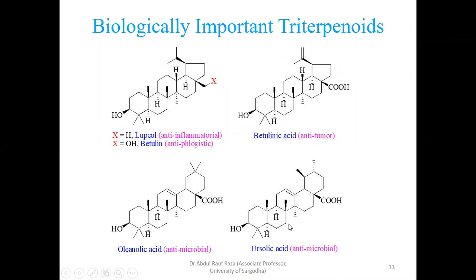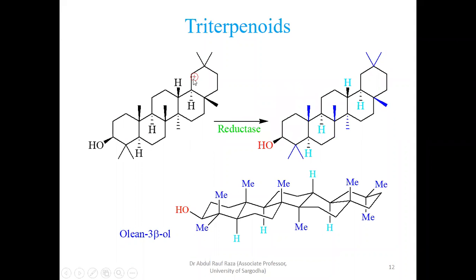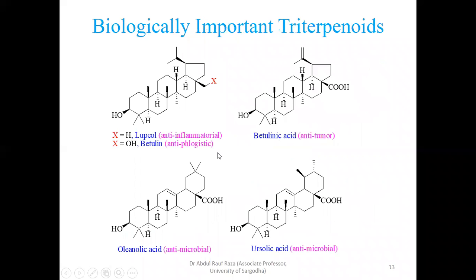Look at this structure — what is the difference? Same structure, just we have two methyls at the same carbon in one case, and two methyls at opposite positions in the other. How is this synthesized? One methyl transfers — this is a secondary carbocation — one methyl transfers from this position to another, generating a positive charge there. Then a reductase transfers a hydride, quenching that charge.